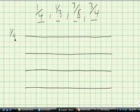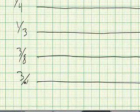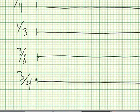I'm going to put one-fourth on this one, one-third on this one, three-eighths on this one, and three-fourths on this one. Since these are all positive fractions, I don't need anything less than zero, so I'm going to start at zero at each of these number lines.